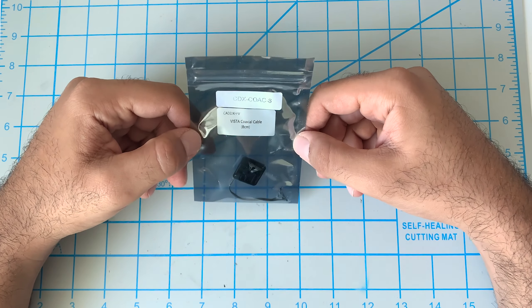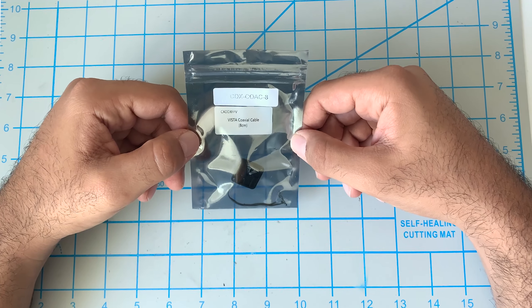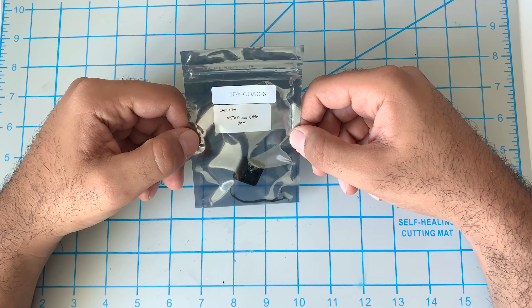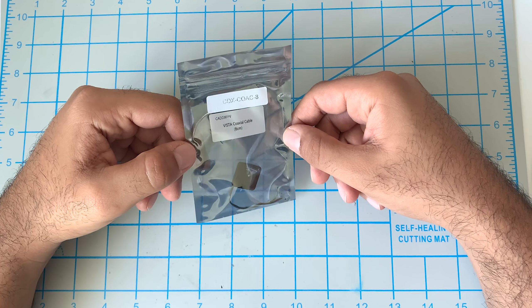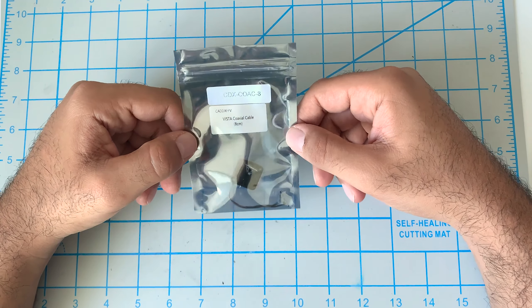These cables come in two lengths, 8 centimeters or 12 centimeters. The 12 centimeter is the size of the original DJI air unit camera cable or the original Caddx Vista camera cable.